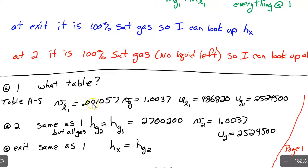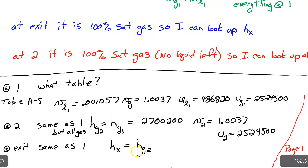Here are the properties read out of the table at state one: the liquid volume, the gas volume, the liquid U, the gas U, and H gas. At state two, it's the same as state one but all gas, so H gas 2 equals H gas 1 — they're the same. It's also the same specific volume because it's the same pressure, just all gas. U2 equals U gas at state two. At the exit, H exiting is all gas at the same pressure as state one — basically H gas 2, which is the same as H gas 1.